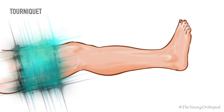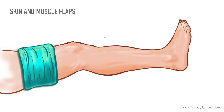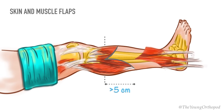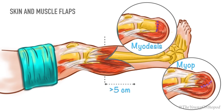A tourniquet should be used except in severely ischemic limbs. Skin flaps should be of full thickness and dissection between tissue planes should be avoided to prevent further devascularization of the tissues. Muscles are sectioned at least 5 cm distal to the intended bone resection. They may be stabilized by myodesis — suturing muscles or tendon to the bone — or myoplasty — suturing muscle to the periosteum or to the fascia of the opposite musculature.